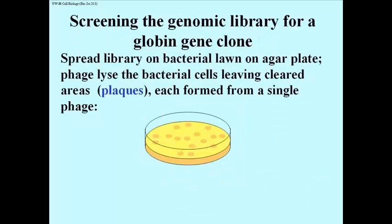In a petri dish, you have a lawn of bacteria — shown here as bright yellow — onto which you have poured some of these packaged phage. Each cell that gets infected releases phage that then infect the adjacent cells. This process keeps happening until the lawn of bacterial cells is peppered with clear spots representing burst open, or lysed, cells. These are called plaques. Each plaque is derived from a single phage that landed on the lawn, infected one cell, and progressively infected surrounding cells until a clearing appeared in the lawn of E. coli cells.